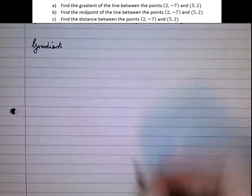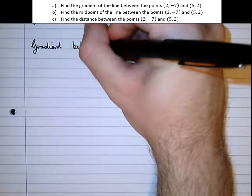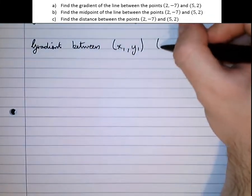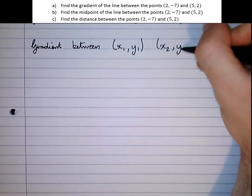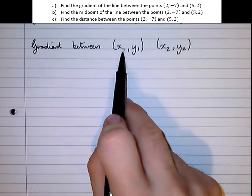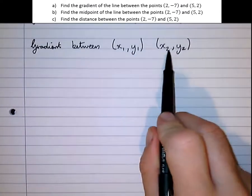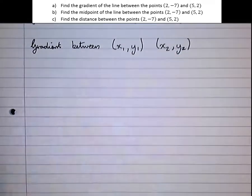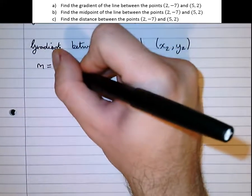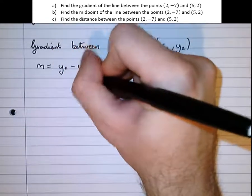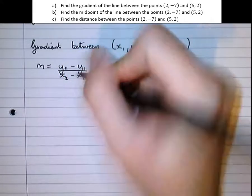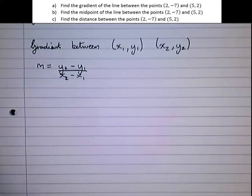So the gradient between two points, we're going to call these x₁, y₁ and x₂, y₂. These little subscript numbers are just labels, so this is the x coordinate in the first point, the y coordinate in the first point, the x coordinate of the second point and the y coordinate of the second point. So the formula is the gradient m equals the difference in the y values divided by the difference in the x values, y₂ minus y₁ over x₂ minus x₁.